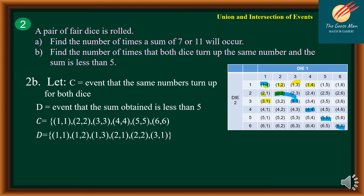We want to find C intersection D. Looking at the highlighted table, only (1,1) and (2,2) appear in both sets. So therefore, C intersection D is equal to {(1,1), (2,2)}.